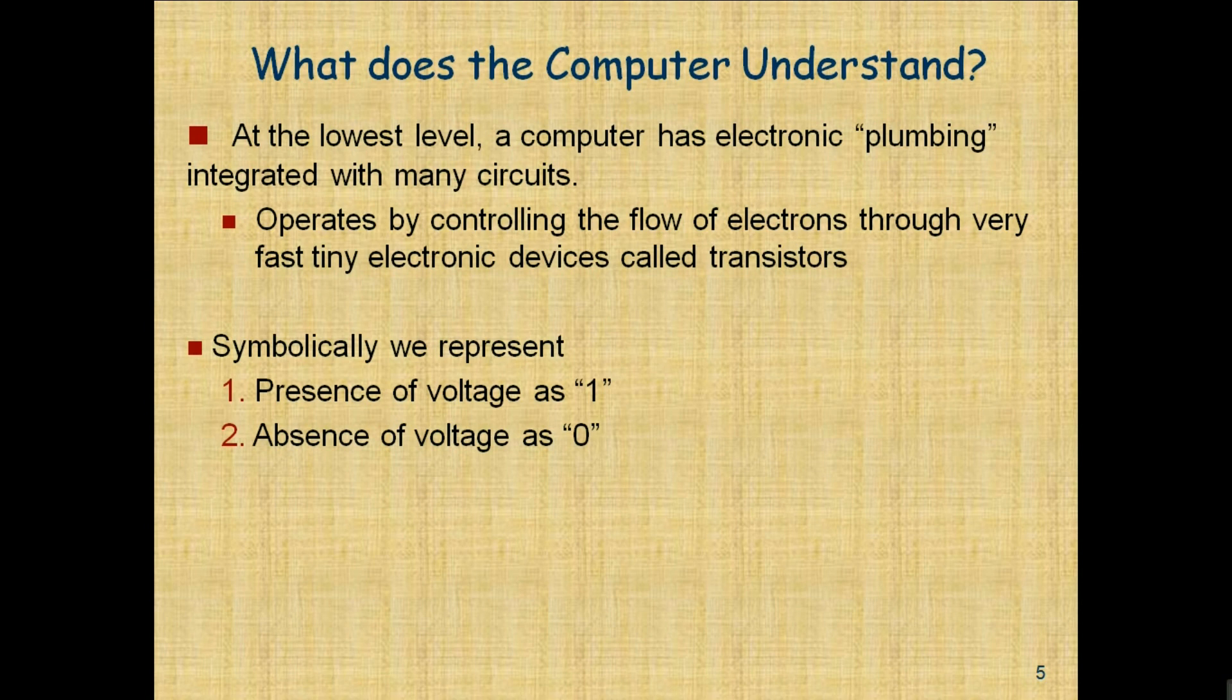Symbolically, we can say that a computer can understand only two things: either one or zero. Everything is in terms of zeros and ones. Presence of voltage is represented as '1', and absence of voltage as '0'. The computer can understand only these two things.